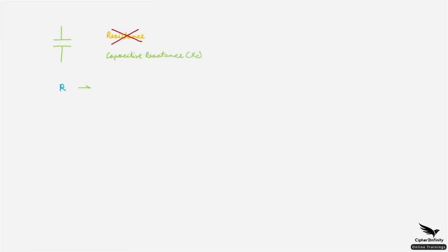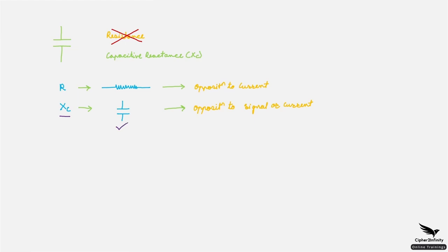I mentioned that whenever we deal with a capacitor, we don't use the word 'resistance.' Instead, we use the keyword 'capacitive reactance.' Resistance is the property exhibited by a resistor to provide opposition to current. Capacitive reactance is the property exhibited by the capacitor that provides opposition to the signal. So capacitive reactance of the capacitor is responsible for the opposition it provides to the signal, and it decides whether the signal will be bypassed or not.